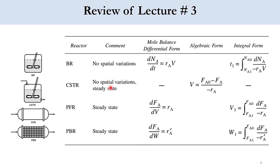In lecture three, we derived the mole balance equations for the four reactors. The batch reactor is spatially uniform but unsteady state. The CSTR is steady state and spatially uniform. PFR and PBR are both steady state but spatially non-uniform. The mole balance equation for the CSTR is in algebraic form, while the other three are in differential or integral form.